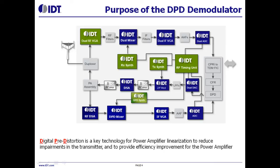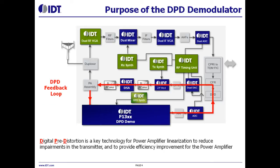A DPD receiver is a reference for monitoring PA distortion, and therefore should be highly linear. A DPD processor analyzes PA distortion and feeds back PA compensation data — this is called the DPD feedback loop. IDT has standalone RF DSA, DPD mixer, and IF VGA with ADC driver products.